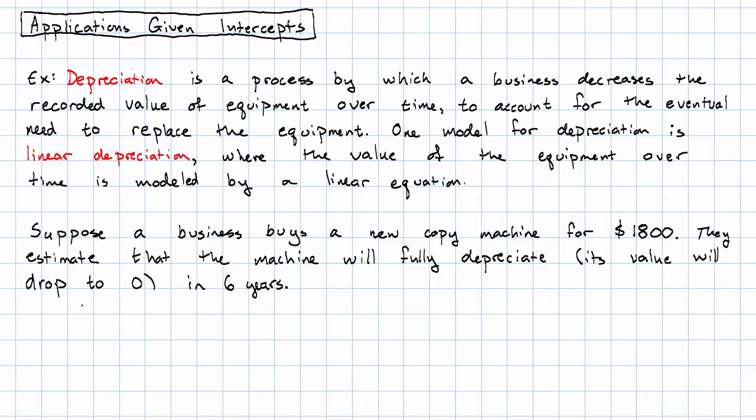In this problem our variables are v, the value of the machine, and t, the number of years since the machine was bought.